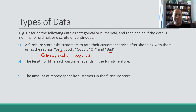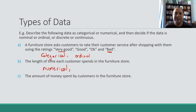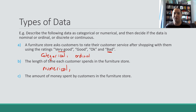Next: the length of time each customer spends in the furniture store. That will be a number — two minutes, three minutes, four minutes — so it's definitely numerical. Is it discrete or continuous? Could the time be any number in a given range? Yes — it could be a minute and two seconds, a minute and 2.5 seconds, or three minutes and 42.83457 seconds. You can get as precise as you want, so we call that data continuous.